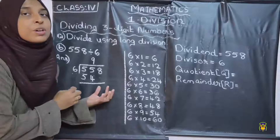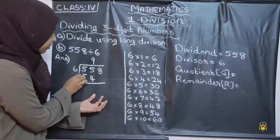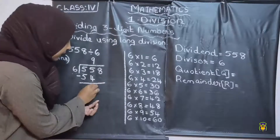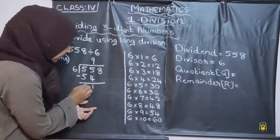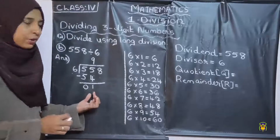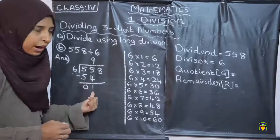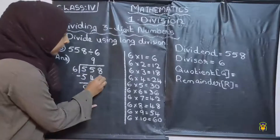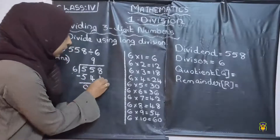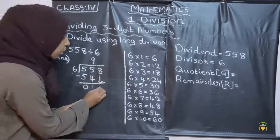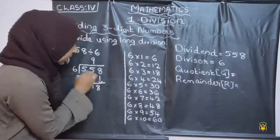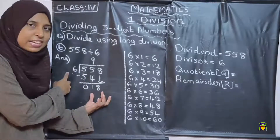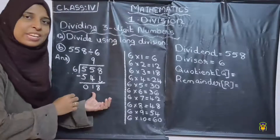Next, what is the next step? We want to subtract. 5 minus 4 is 1, then 5 minus 5 is 0. So here we get 1. 1 is less than the divisor, so we want to bring down the third digit, which is 8. Now the number becomes 18. 18 is greater than the divisor, so no problem, we can divide.